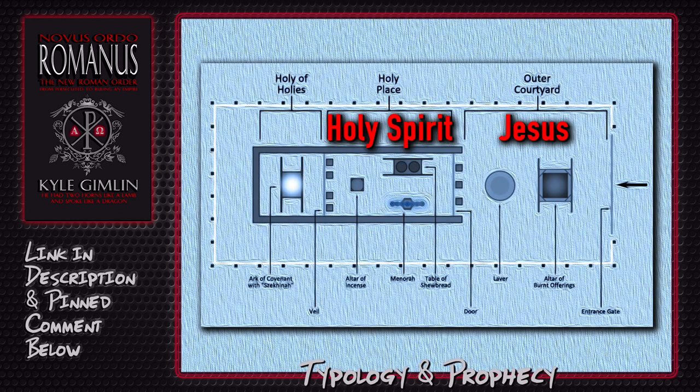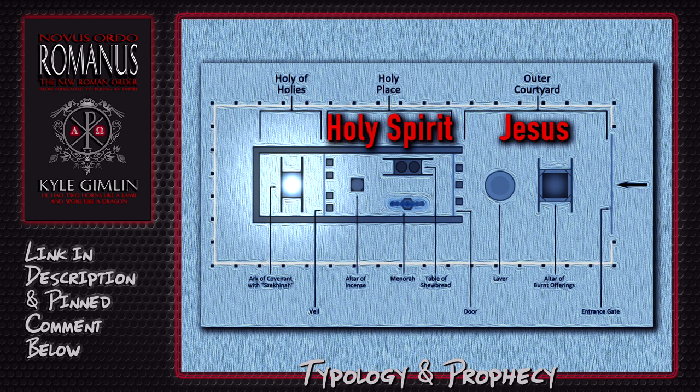Let's go back to our tabernacle chart and recap. We started with the outer courtyard and learned that Jesus was the God with us of the Old Covenant. Then we moved into the holy place and learned that the Holy Spirit is the God with us of the New Covenant. So that leaves us with God the Father and the Most Holy Place. In the Most Holy Place, behind the veil that separated the holy and the most holy places, there was the Ark of the Covenant. What I want us to focus on is what was on top of the Ark — the mercy seat.